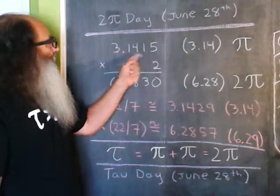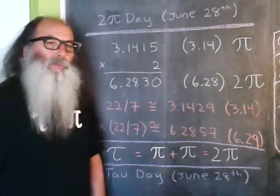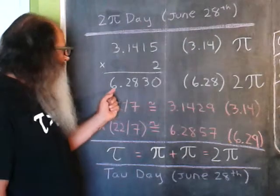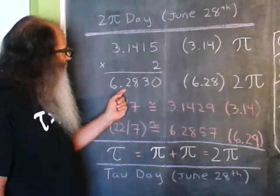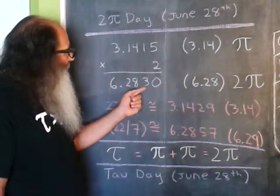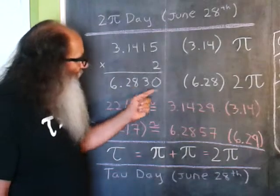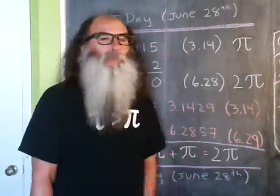If I take 3.1415 and multiply it by 2, we get 6.2830. If I round that to the nearest hundredth, we get 6.28, which is 2π.